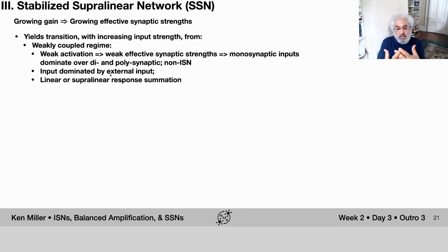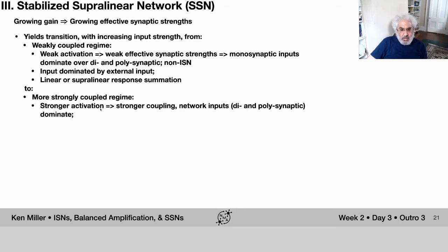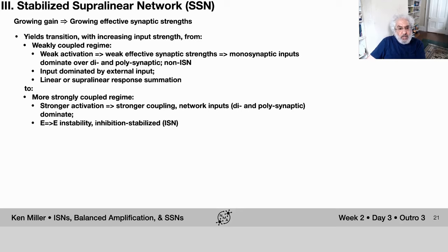In this weakly coupled regime, adding two input patterns just adds their feedforward inputs and puts them through a superlinear input-output function, yielding superlinear response summation - the response to two inputs is more than the sum of responses to the two individual inputs. This becomes linear as gains increase and recurrence kicks in. Then you transition to a strongly coupled regime with stronger activation: di- and polysynaptic inputs start to dominate over monosynaptic feedforward inputs. The E-to-E connections get strong enough that the excitatory subnetwork could become unstable by itself, but if feedback inhibition is strong enough, the network reaches a stable fixed point and becomes an inhibition-stabilized network.